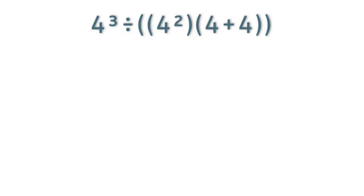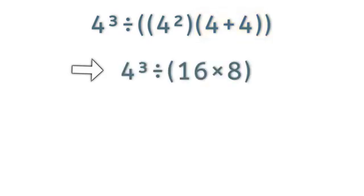So in this expression, since we have parentheses, first we need to simplify everything inside the parentheses. Here we have 4 squared, which can be written as 16. And 4 plus 4 is 8. Okay, now we have 16 times 8 inside the parentheses, which equals 128.